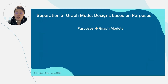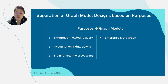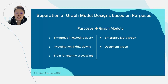We have identified three sets of purposes for using graph as an agent. First, we are interested to find out how enterprises operate, and this can be made available by an enterprise metagraph. We also need the ability to investigate and drill down to every single document, so that users are convinced of the accuracy of any insights generated. Lastly, we also need a brain which helps us to process all this information, which is our insights graph.